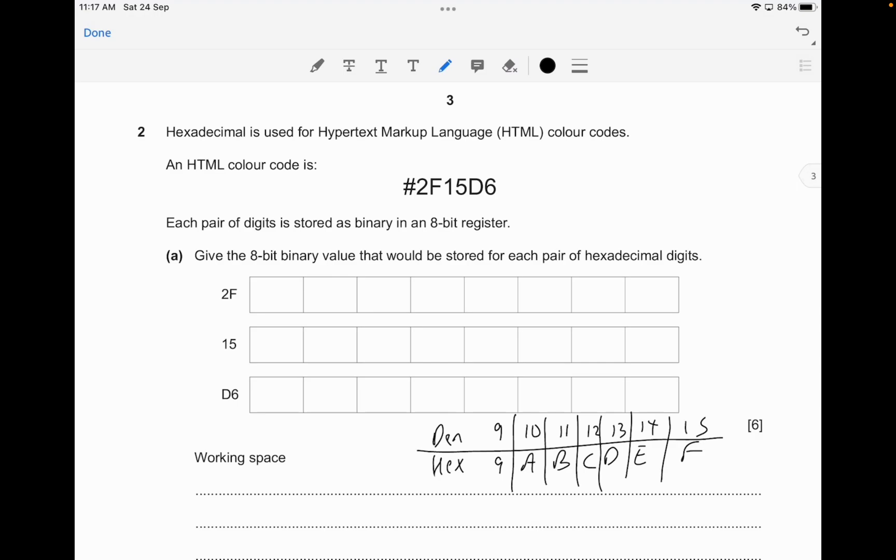The question is about hexadecimal used for HTML color codes. An HTML color code is shown as hashtag 2F15D6. Each pair of digits is stored as binary in an 8-bit binary register. You have to give the 8-bit binary value that would be stored for each pair of hexadecimal digits.